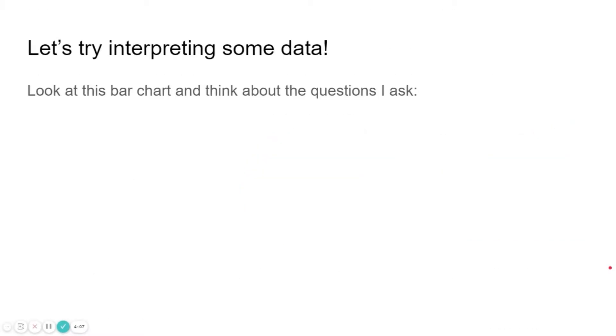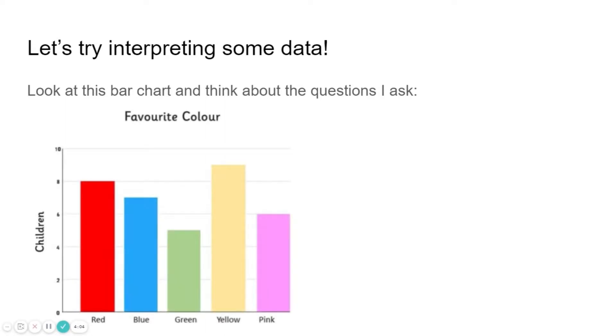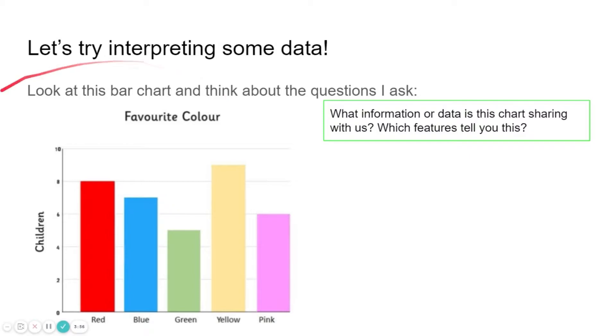Let's try interpreting some data. Look at this bar chart and think about the questions that I ask. What information or data is this chart sharing with us? Which features tell you this? So you can see that the title is favourite colour at the top there and on the left hand side there's a label saying children. So we imagine that this bar chart is telling us that some children have been asked their favourite colour and this bar chart is showing us how many picked each colour.